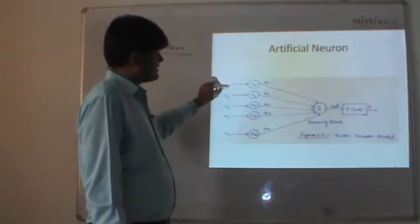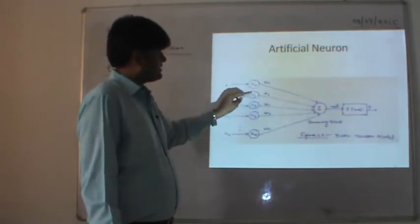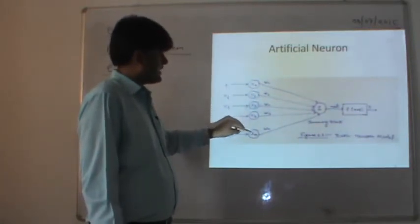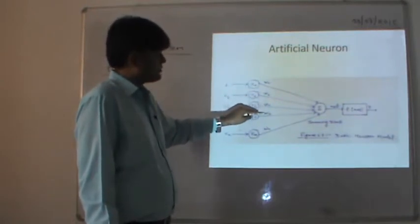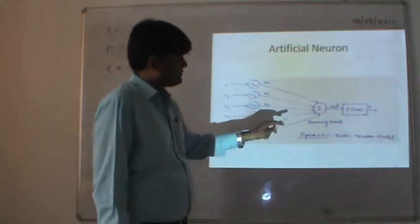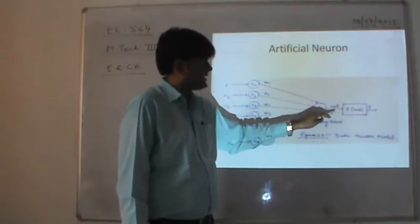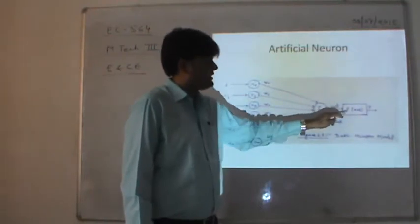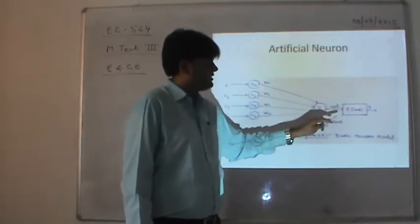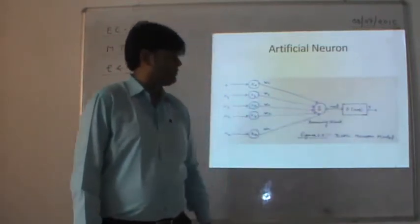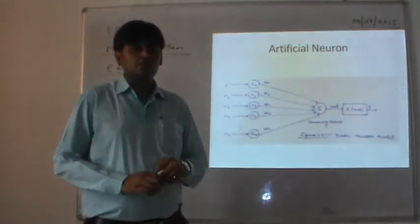The inputs X1, X2, X3 ... Xn are multiplied by weights W1, W2, W3 ... Wn respectively. These are summed by a summing junction to produce the signal 'net,' and a non-linearity function is applied to this summed signal. Finally, we get the output Y. That is the basic neural model.